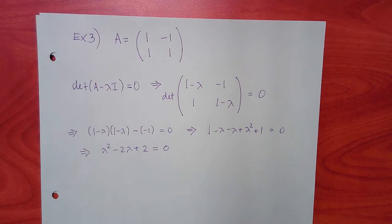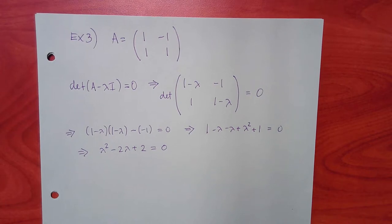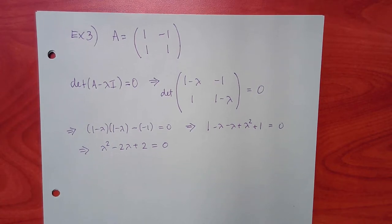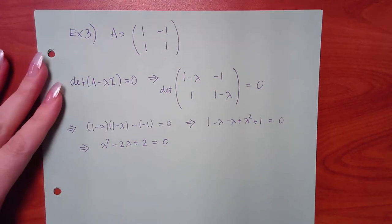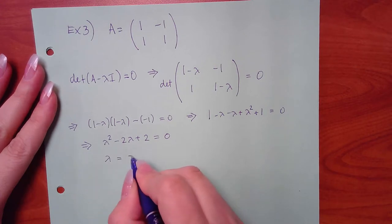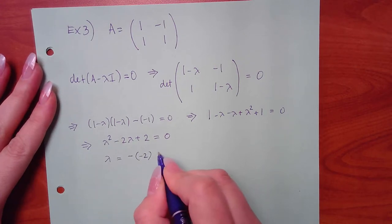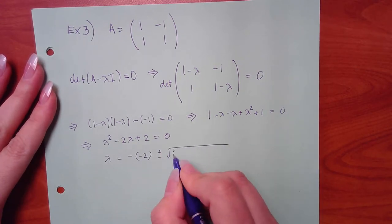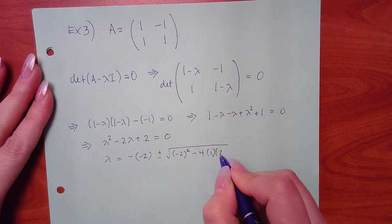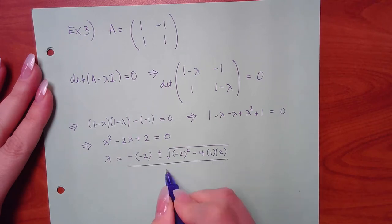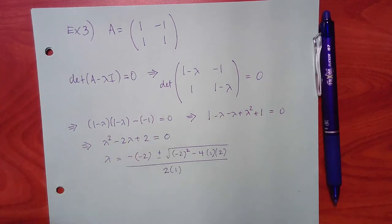This can't be factored, so we use the quadratic formula: lambda equals negative b plus or minus the square root of b squared minus 4ac, all over 2a. The coefficients are a=1, b=negative 2, c=2.